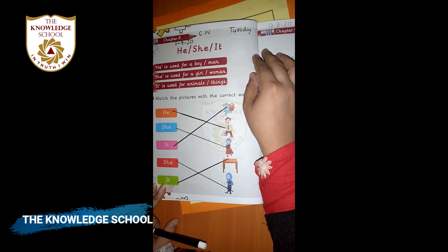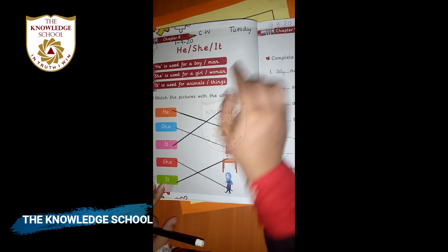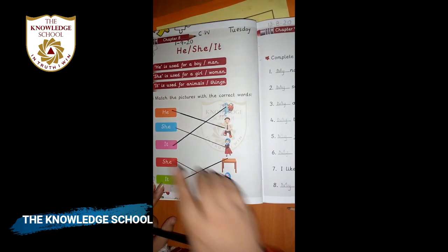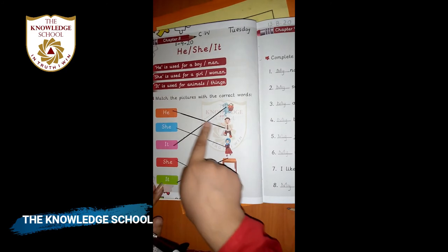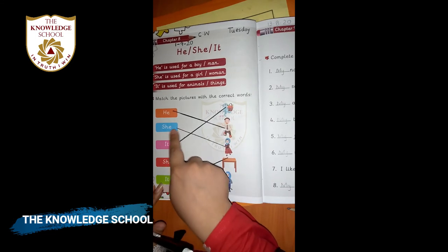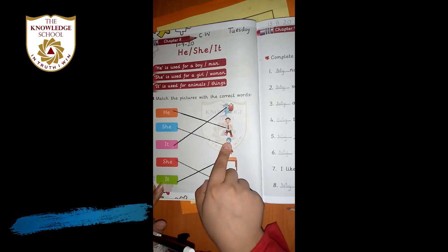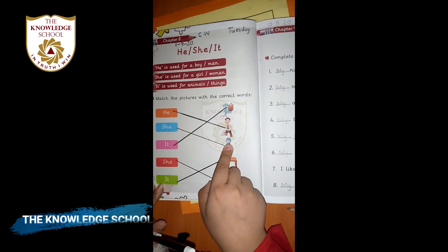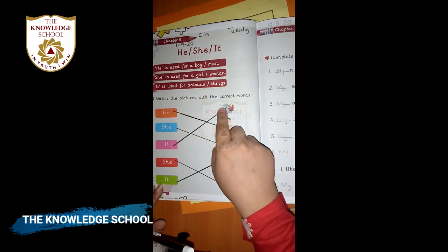Today we have done the question: match the pictures with the correct words. He is matched with a man. She is matched with a girl because she is used for a girl. It is used for animals, so it is matched with the animal. She is a woman.